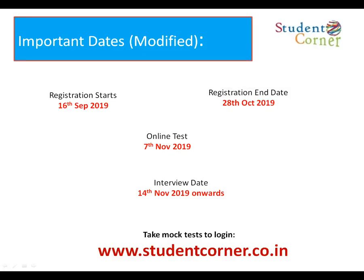Today let us discuss about speed, time and distance. The basic rule is distance is equal to speed into time. Distance is directly proportional to speed and distance is directly proportional to time. But speed and time are indirectly related — if one increases, the other decreases. This is the basic rule that we all need to know.